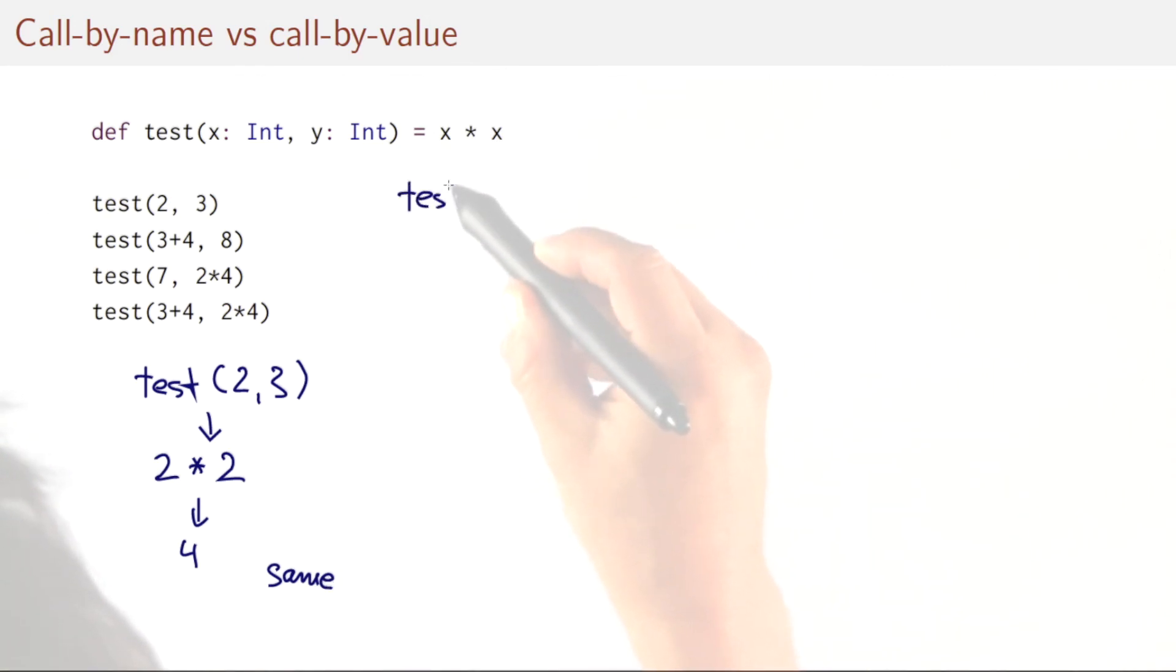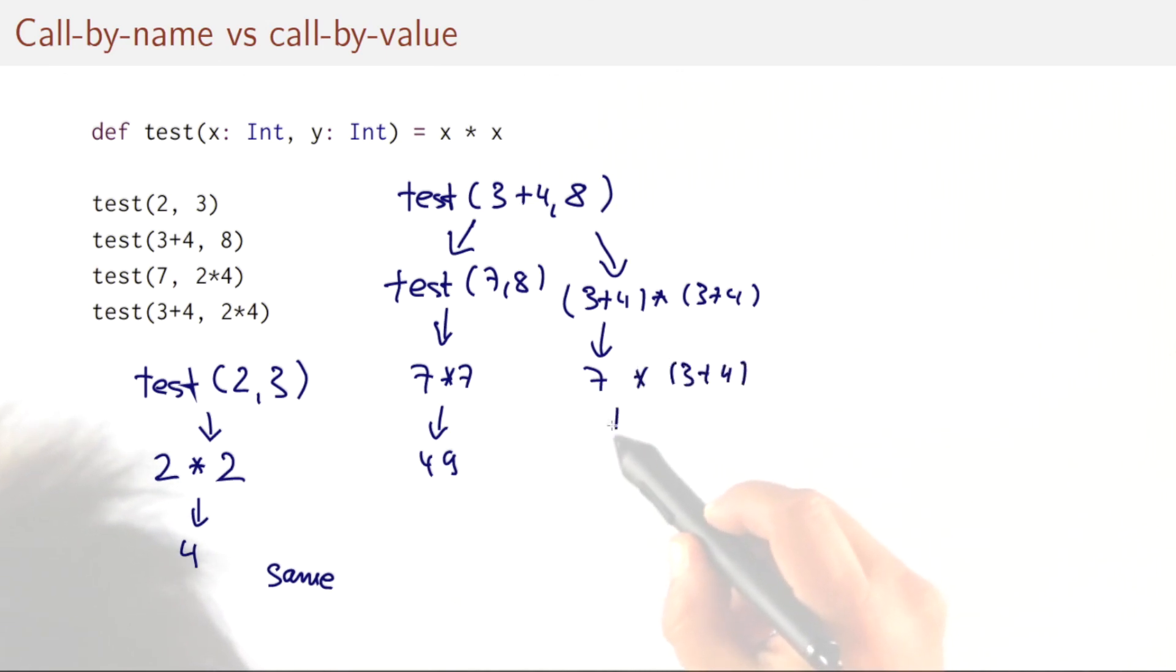Let's do the next one. Test three plus four, eight. Under call by value, we have to evaluate the arguments. So we get test seven eight. And that gives us seven times seven, and the final result. Whereas under call by name, we get test three plus four times three plus four. That reduces to seven times three plus four. Seven times seven and forty-nine. In one step more than the call by value version. So call by value has the advantage here.